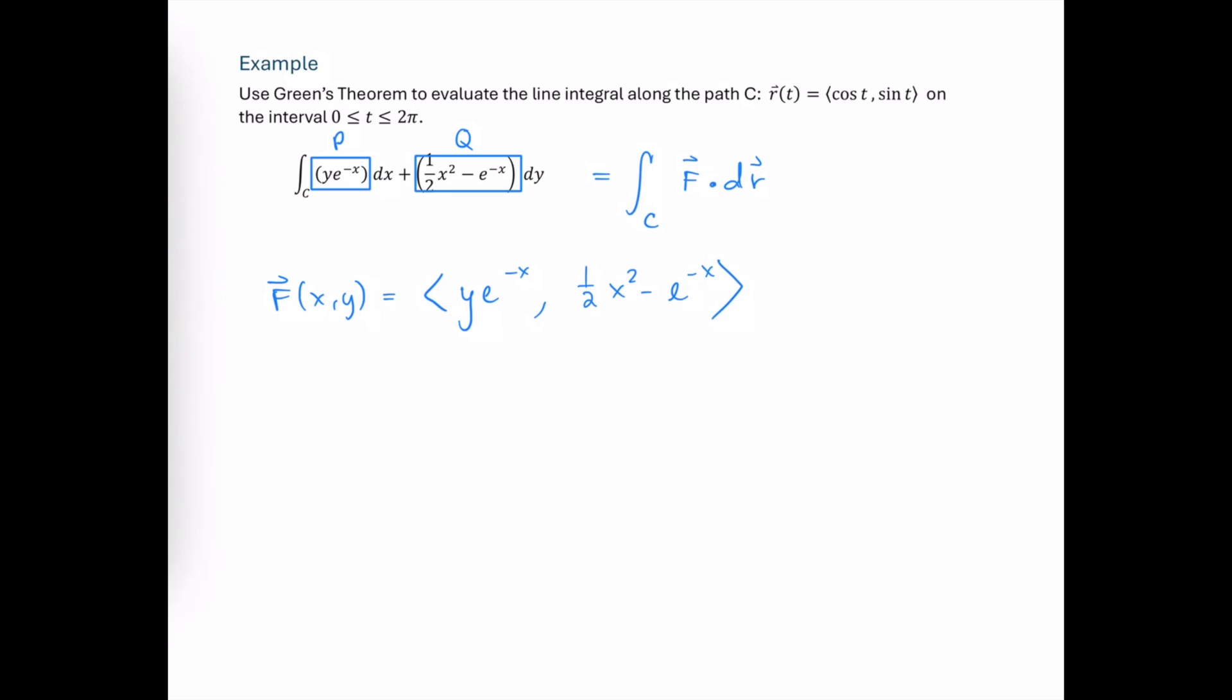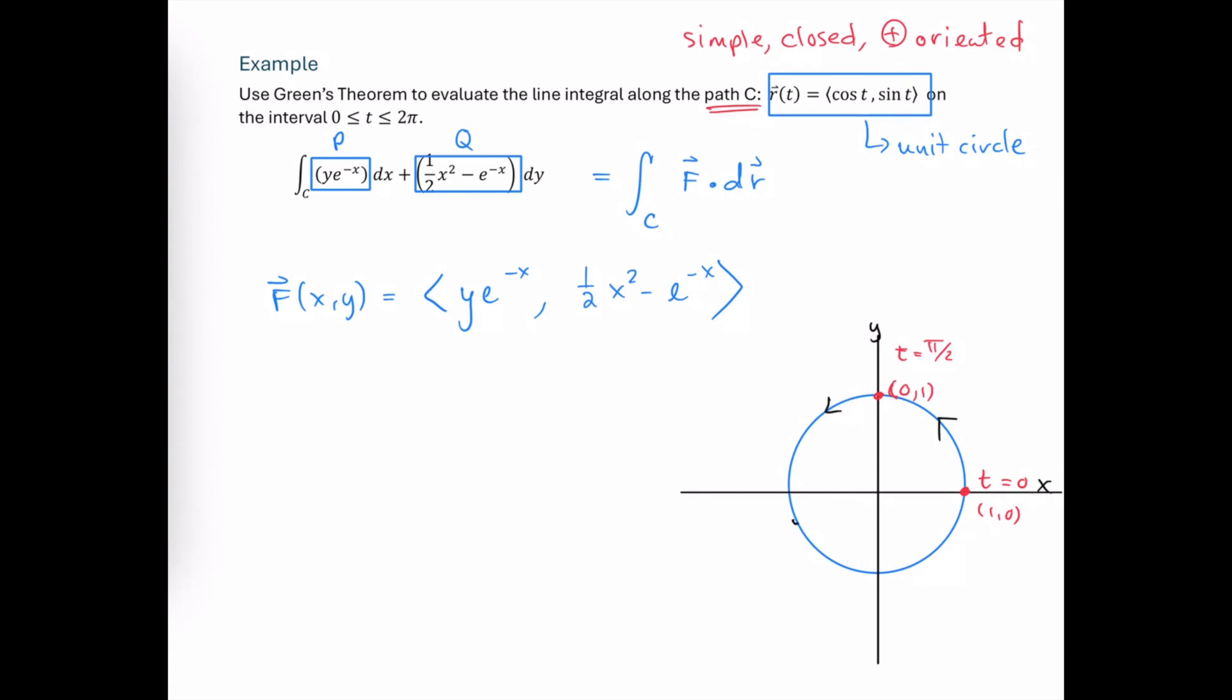Now remember, Green's Theorem has a lot of criteria that need to be met about the path C. It needs to be simple, closed, and positively oriented. In this example, we're given the parametric equations for the path C, and we recognize this as being the unit circle. When t is equal to 0, we're at the ordered pair (1,0). And when t is equal to pi over 2, we're at the ordered pair (0,1). And we can see now that we are indeed positively oriented and a simple enclosed curve.